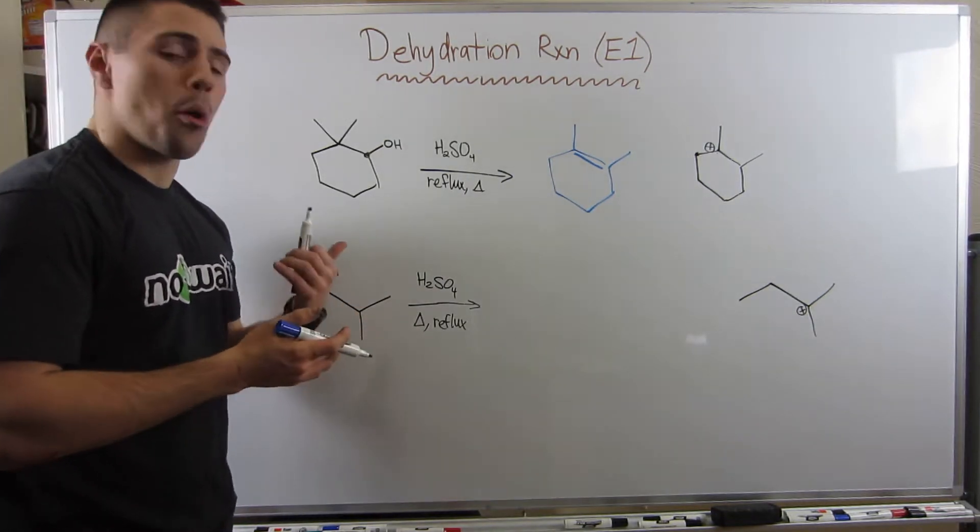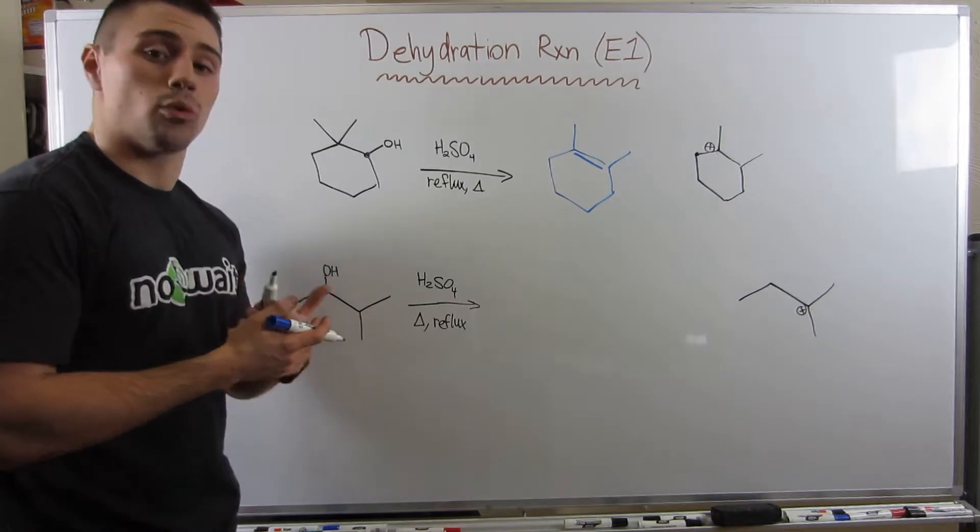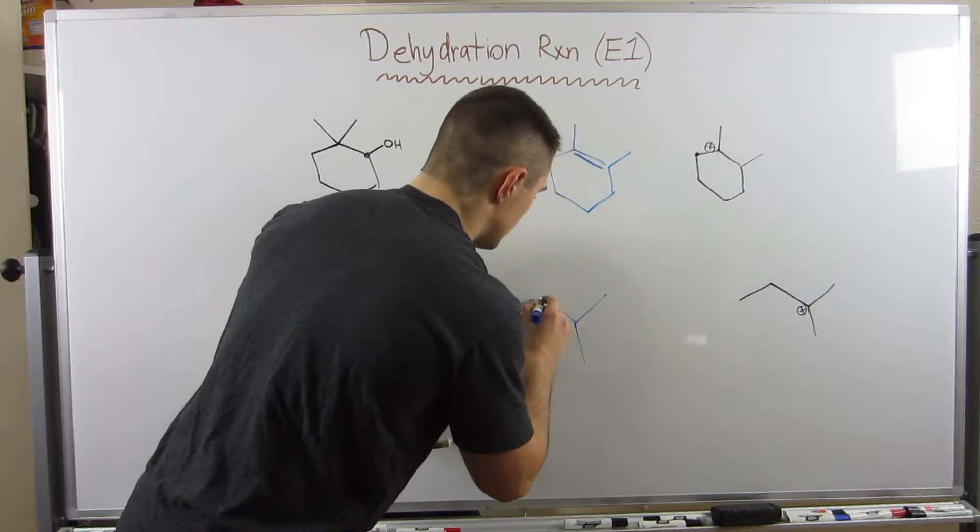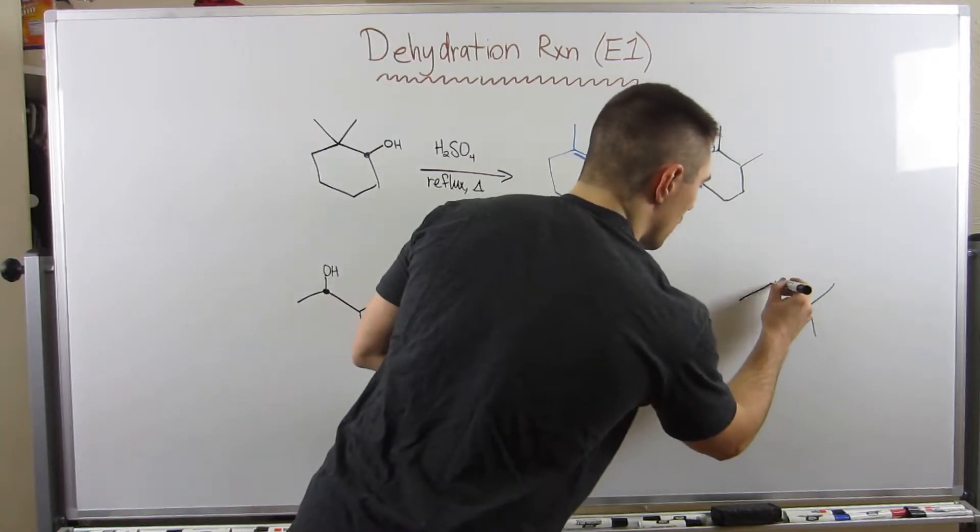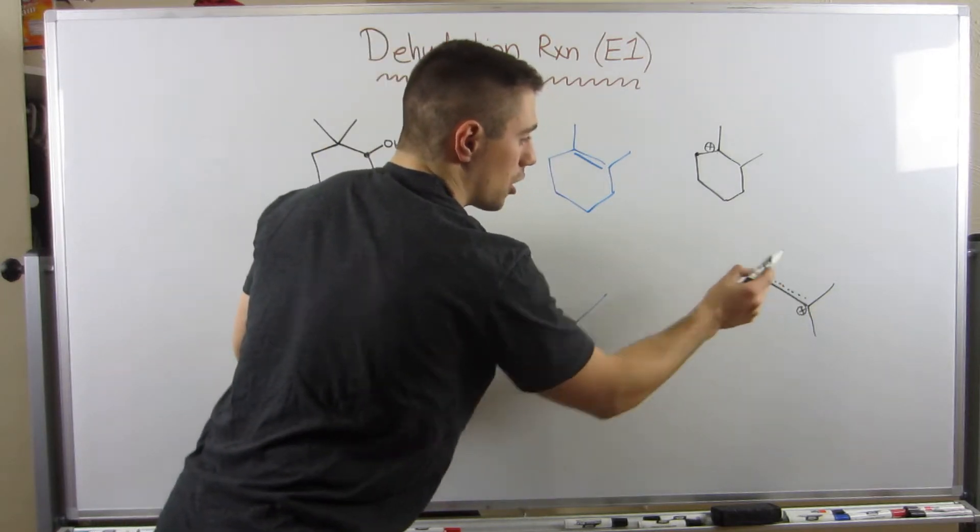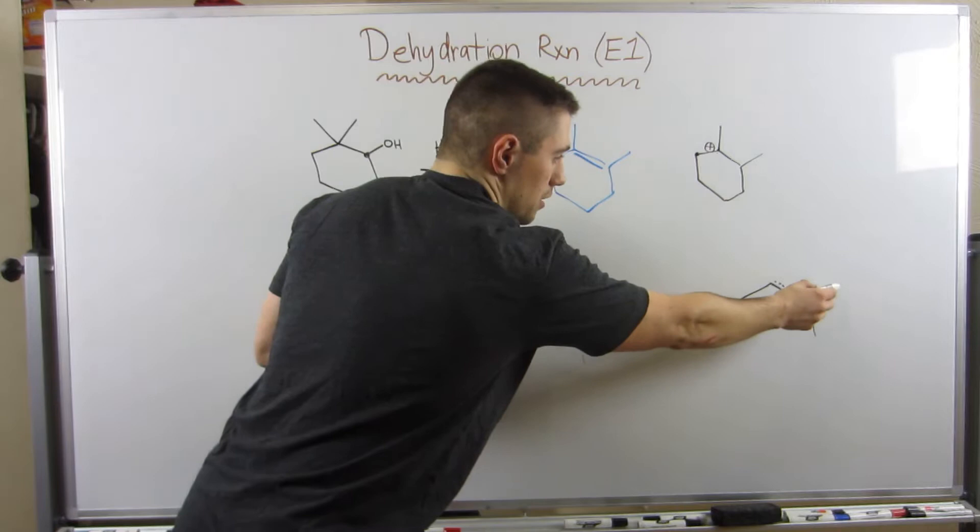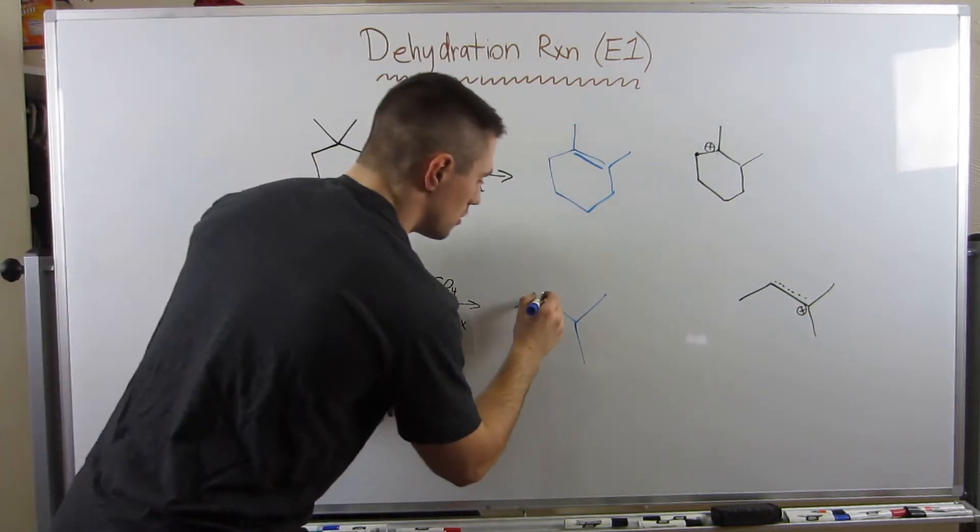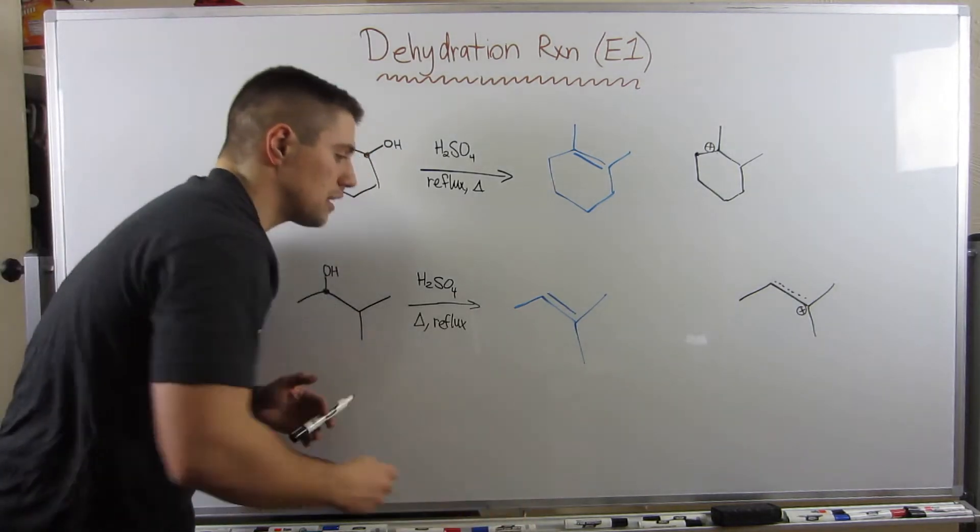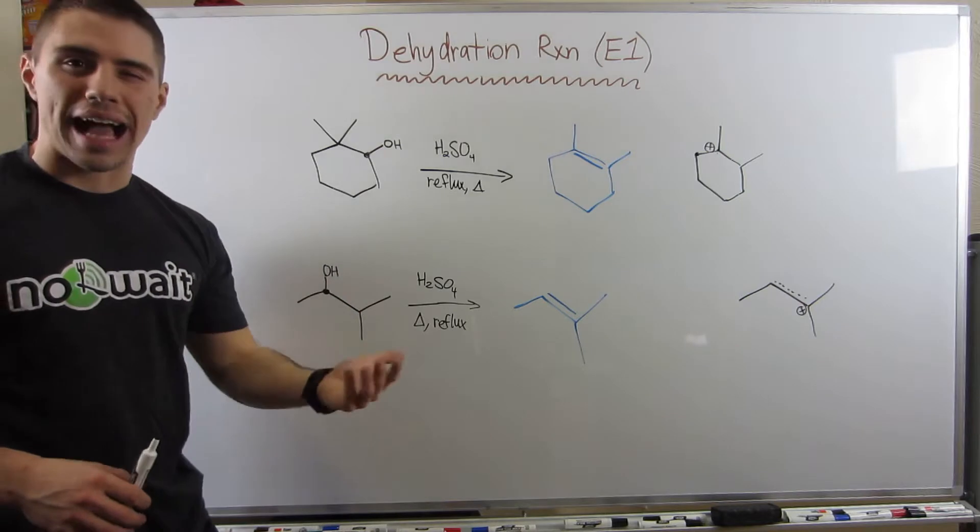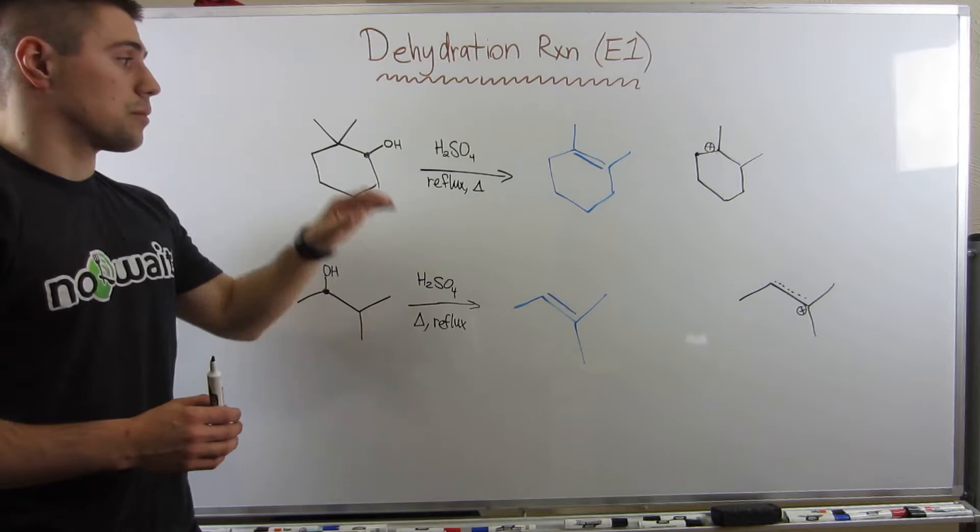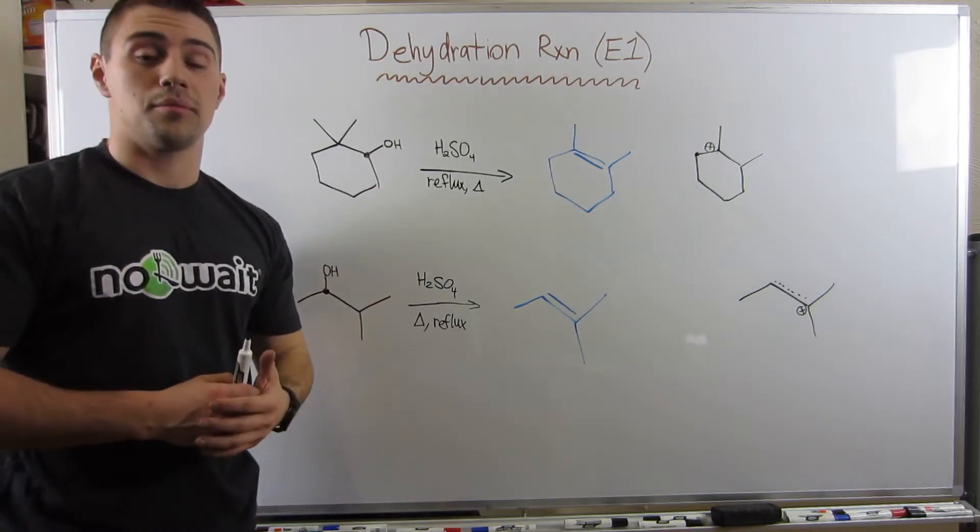So if I'm just going to erase this and redraw my new carbocation, now it's right there. Hopefully that wasn't too fast. So remember, we're making a double bond here, the more substituted double bond. So hopefully it's easy to see that we're going to make our double bond going this way, because we would have a tertiary carbon bonded to a secondary carbon versus a tertiary double bonded to a primary. So the double bond goes right there.